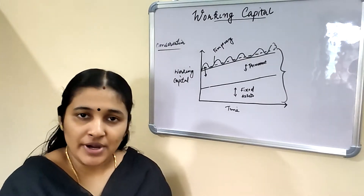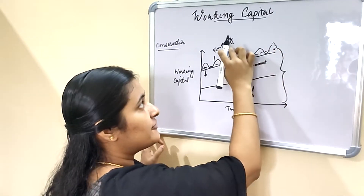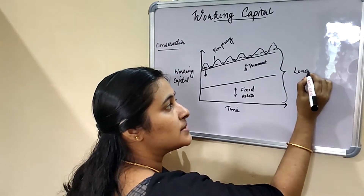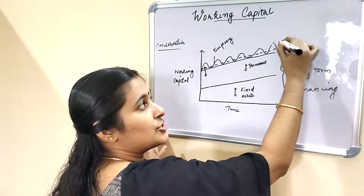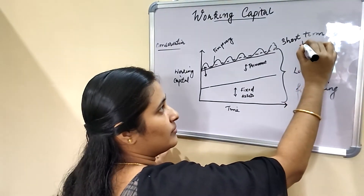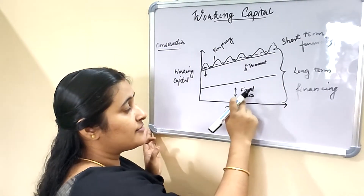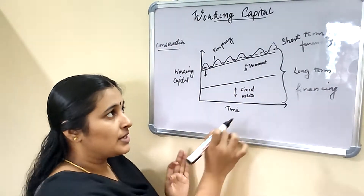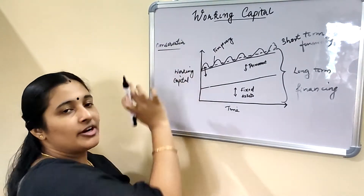The next approach is the conservative approach. Under this approach, permanent assets and a part of temporary assets are financed through long-term sources. Short-term financing is used only to meet emergency cases. So long-term financing covers fixed assets, permanent assets, and part of temporary assets, while short-term financing is only used for meeting emergency contingencies.